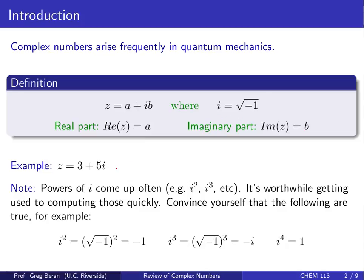An example might be something like z equals 3 plus 5i. When you're working with complex numbers, powers of i come up a lot. It's worth getting practice with and being familiar with the results of taking various powers of i — things like i squared, i cubed, and so on. For example, i squared, which is just the square root of minus 1 squared, is equal to negative 1. i cubed is equal to minus i, i to the fourth is equal to 1, etc.